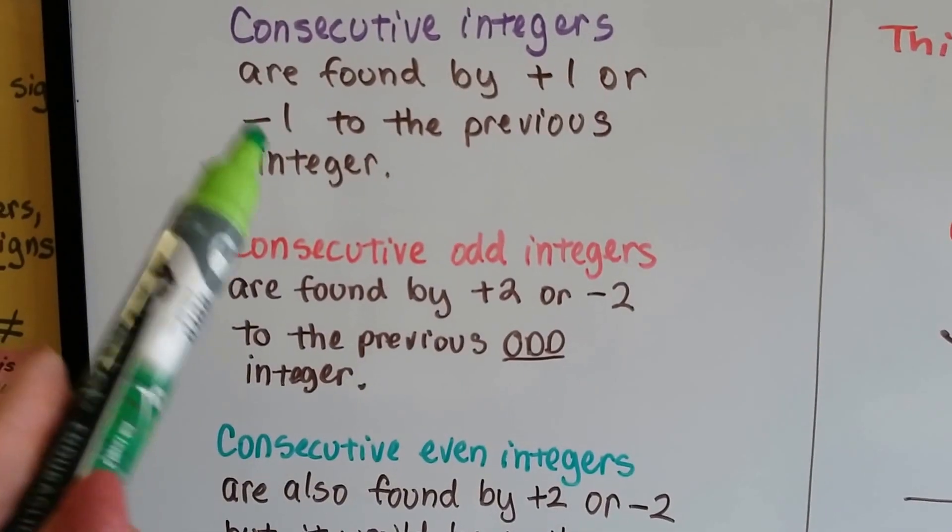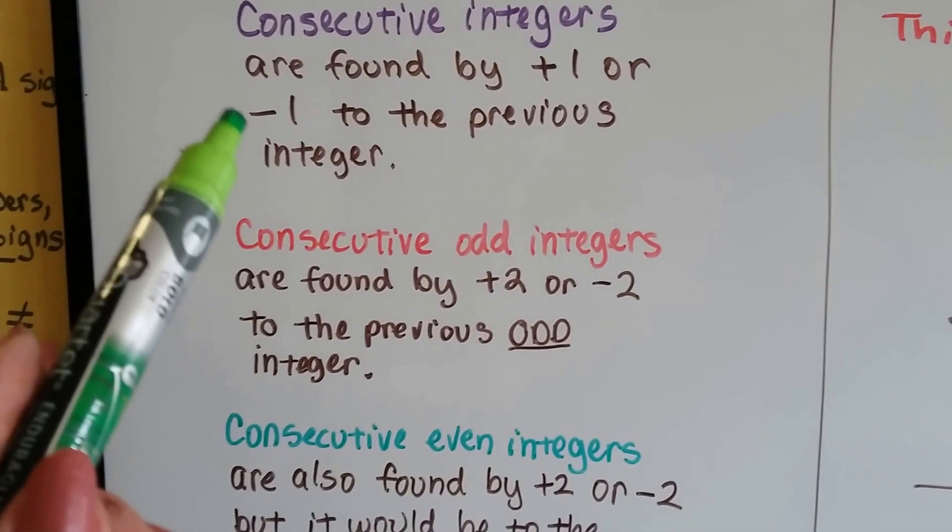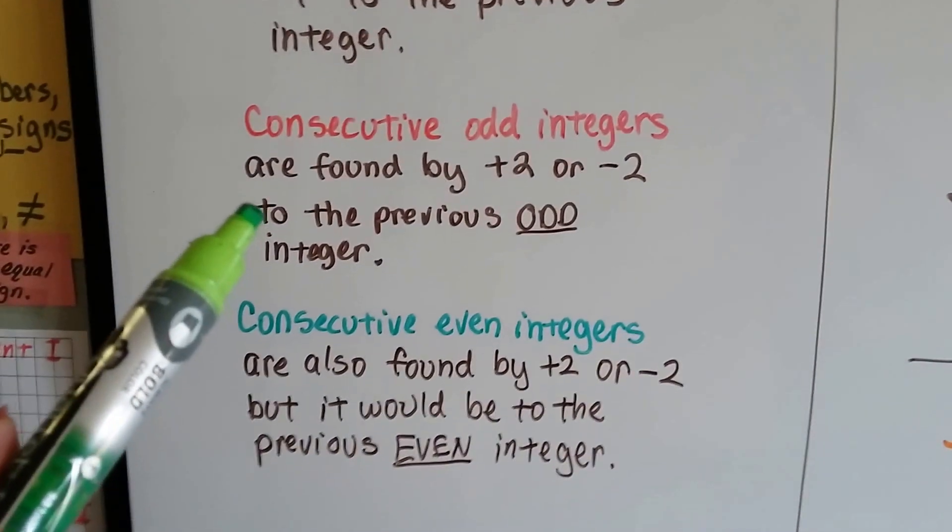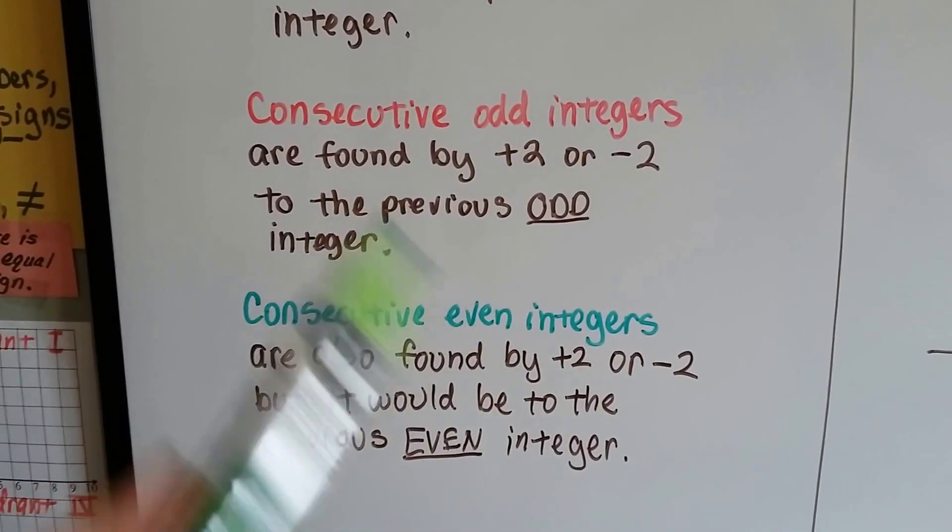So if they're in order, just regular consecutive integers, we're going to plus one or minus one to go up or down. But if they're odd or even, we're going to plus two or minus two.